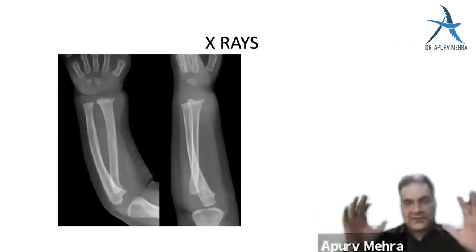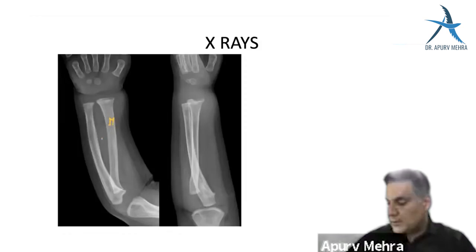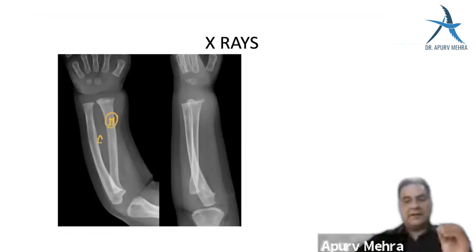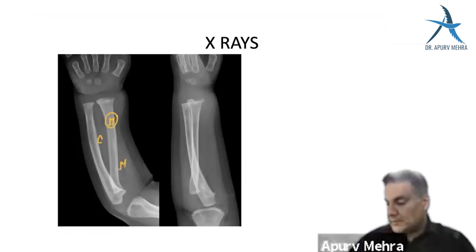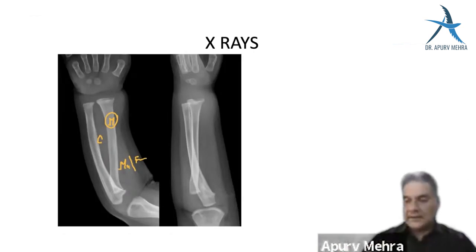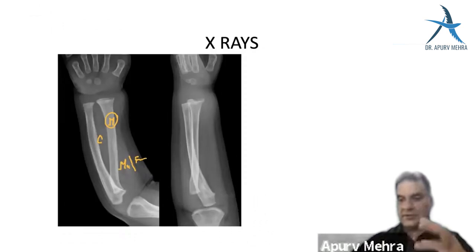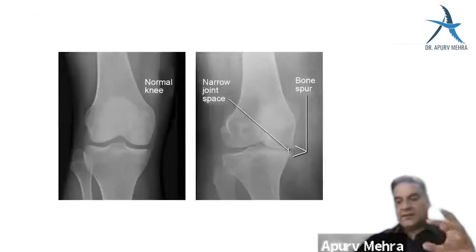The first investigation in orthopedics is X-rays. X-rays show bones — the marrow in the center, the cortex, and soft tissues like muscles, fascia, fat, and skin. Inside the fascia are compartments, which you relieve in a fasciotomy. X-rays are the first investigation and can show both bone and soft tissue, not just bone.